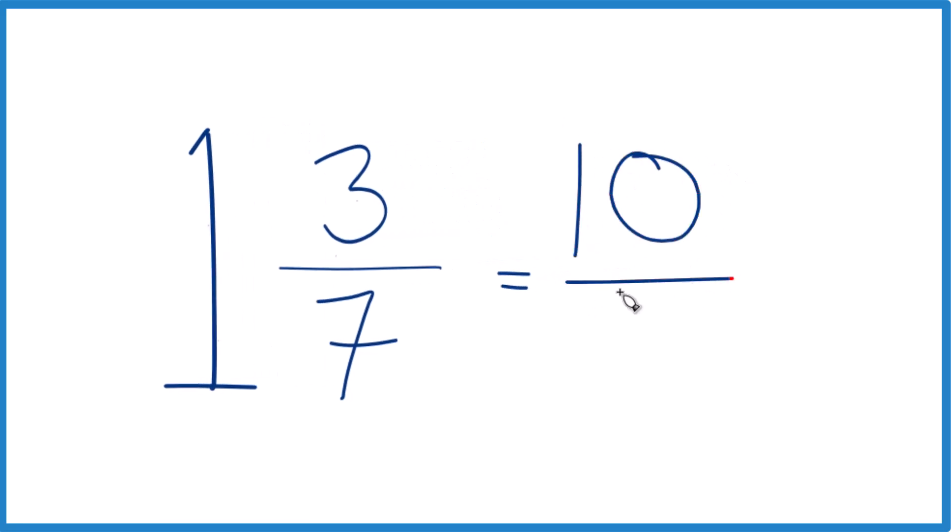And then we're just going to take the 7, the denominator, and bring it across, and that's the improper fraction for the mixed number 1 and 3 sevenths. We get 10 sevenths.